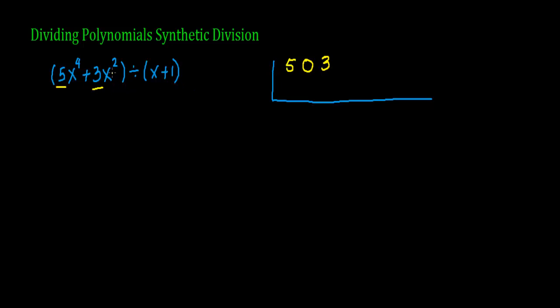The next power after x squared should be x. There is no x term, so I'm going to fill that in with a zero. And the constant term is also missing, so I'm also going to fill that in with a zero.